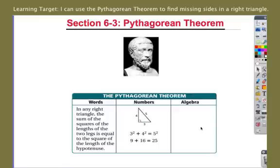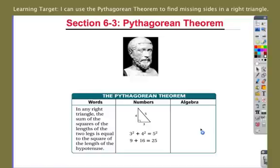If you take the two legs, which are the two sides that form the 90-degree angle, if I square them and I add those up, it's the same as if I square the hypotenuse of the longest side. So take a minute in your notes, maybe pause the video, and jot this little diagram down. Leg squared plus leg squared equals hypotenuse squared.